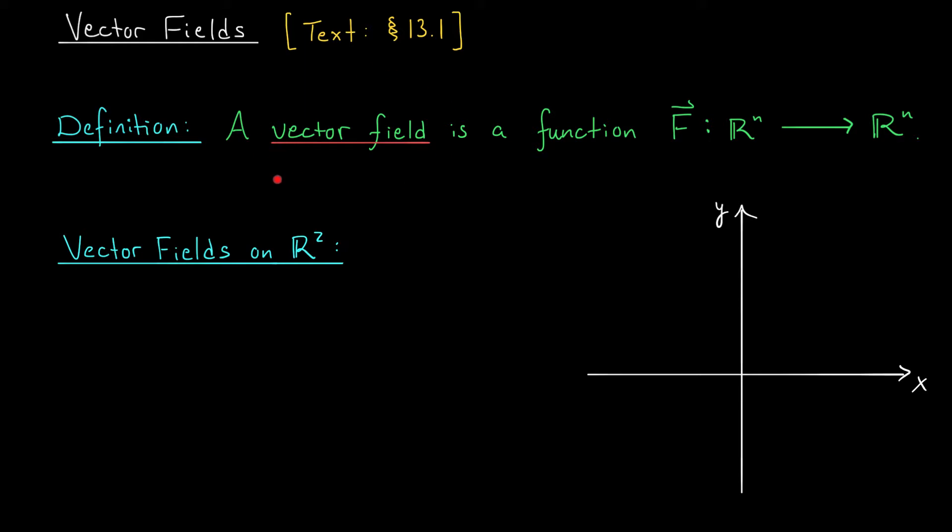But now we're going to be dealing with something a little different. We're going to be dealing with vector fields. This is a fancy term for something with a very simple definition. A vector field is just a function from R^n to R^n. Notice that the dimensions here are the same. So a function from R² to R², that's a vector field. A function from R³ to R³, that's a vector field. These are the settings we're going to be most interested in. In this lesson, we're just going to be talking about the basics. We're going to see some examples, learn how we can visualize vector fields, and learn about some physical interpretations.